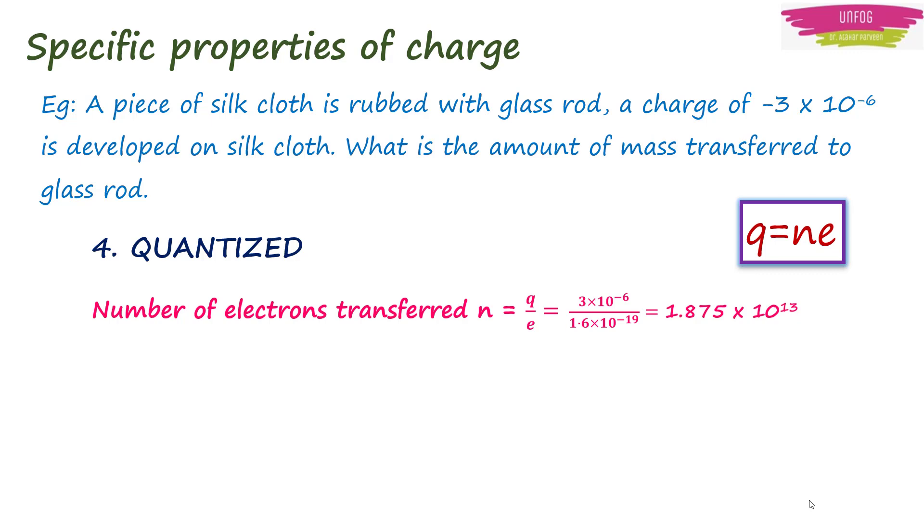Here, we know that mass of 1 electron is equal to 9.1 × 10^-31 kg. Then mass of 1.875 × 10^13 electrons will be 1.875 × 10^13 multiplied by mass of 1 electron. So finally, we are going to get the mass of the number of electrons which will be equal to 17.06 × 10^-18 kg in this case.